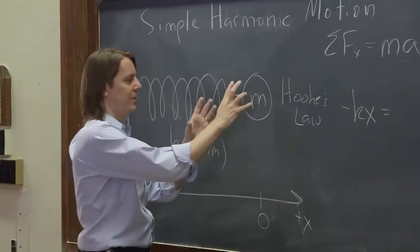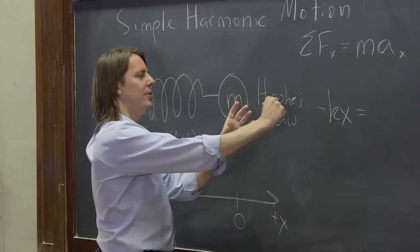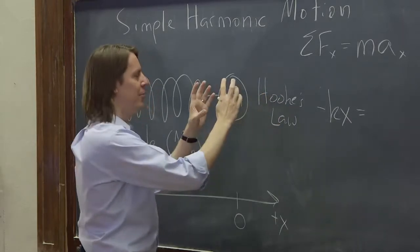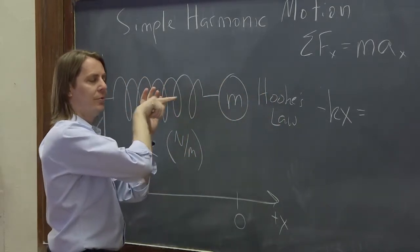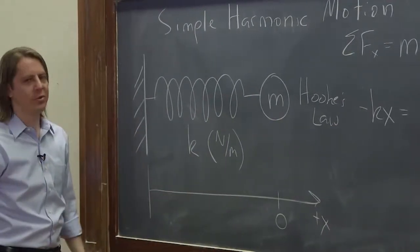And the minus is there because you can kind of see if I move this mass to positive x, the force is negative, is back. If I move the mass to negative x, the force is forward, positive. That's why the negative sign is what tells you that the spring always pushes back.